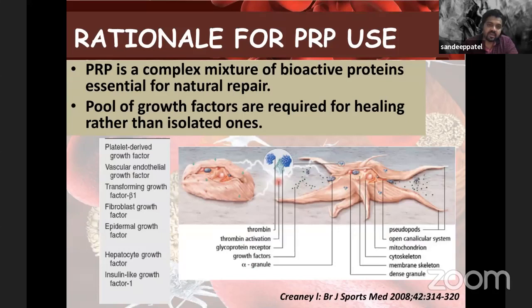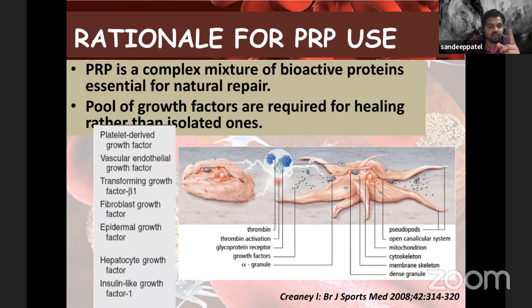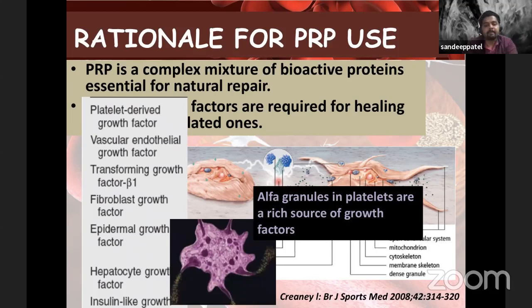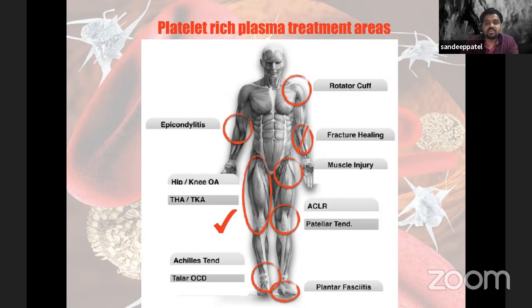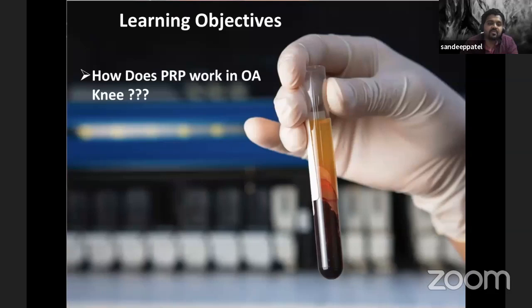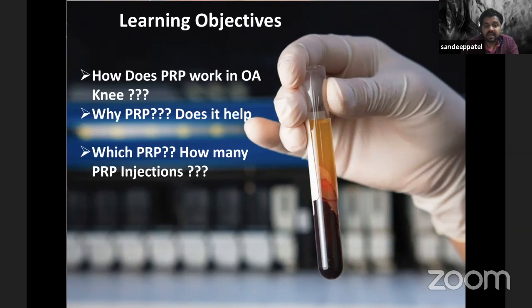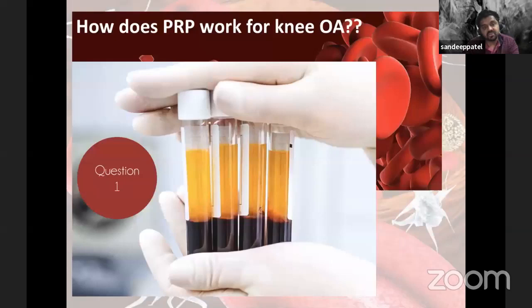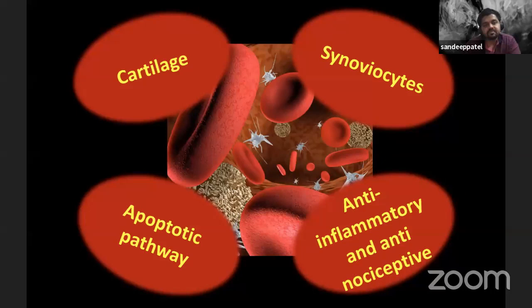What is the rationale for PRP use? PRP is a complex mixture of bioactive proteins required for repair. The alpha granules within PRP contain growth factors like PDGF, vascular endothelial growth factor, and transforming growth factor beta. When these alpha granules degranulate, they release a cocktail mixture — and that cocktail is most important. For osteoarthritis, PRP seems to act on cartilage, synoviocytes, anti-inflammatory pathways, and apoptosis. There are many preclinical studies, both in vivo and in vitro, supporting this.